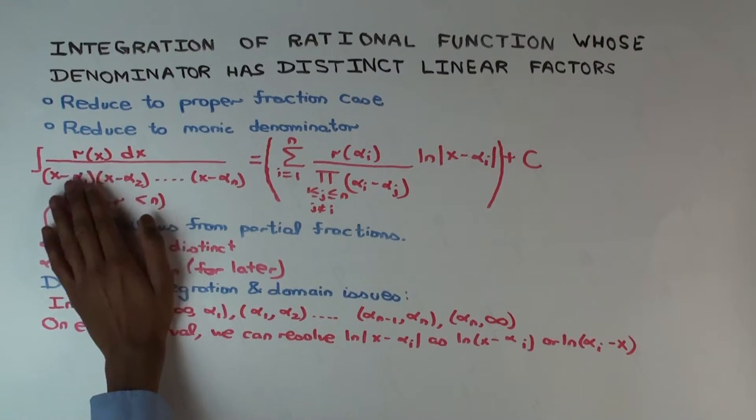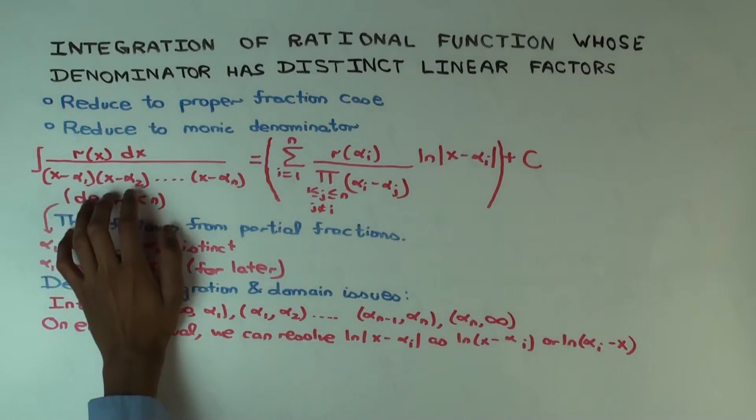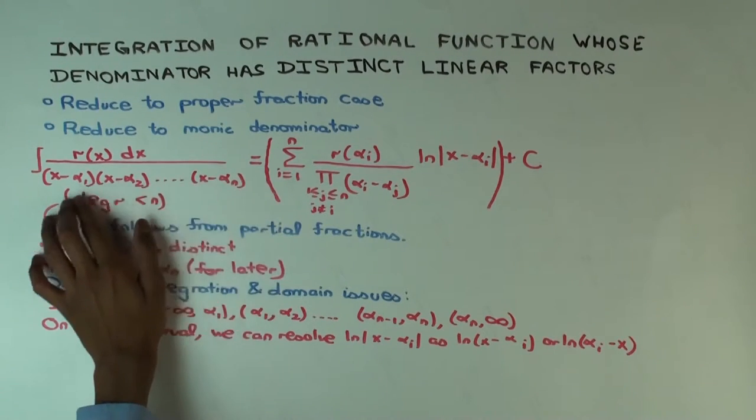If it does, then that would cancel and you'd have a removable discontinuity. So I'm assuming that r(x) is not divisible by any of these.